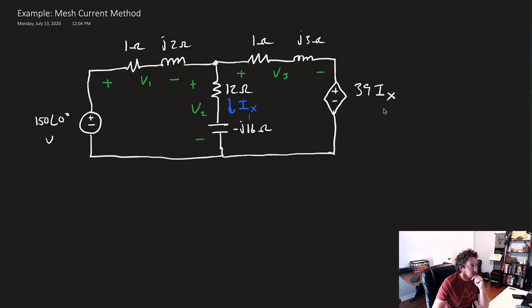Okay, in this example we're going to work on solving the circuit with phasers using the mesh current method that you learned in your circuits one class. So we've got the circuit already set up. They did a nice job. They already gave us the phaser representation of everything, so we don't have to convert to phasers.